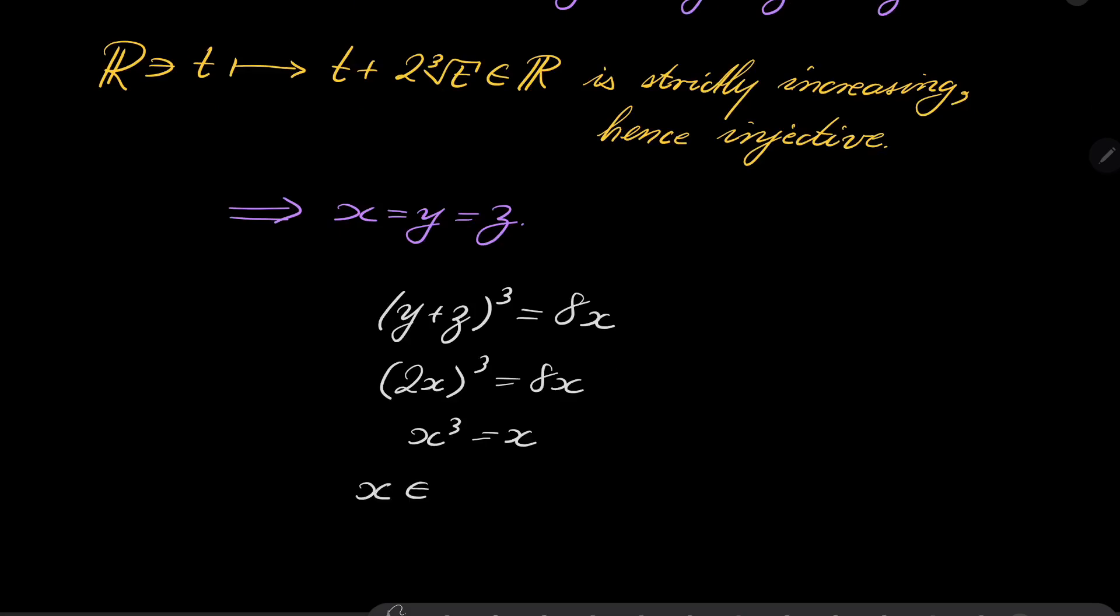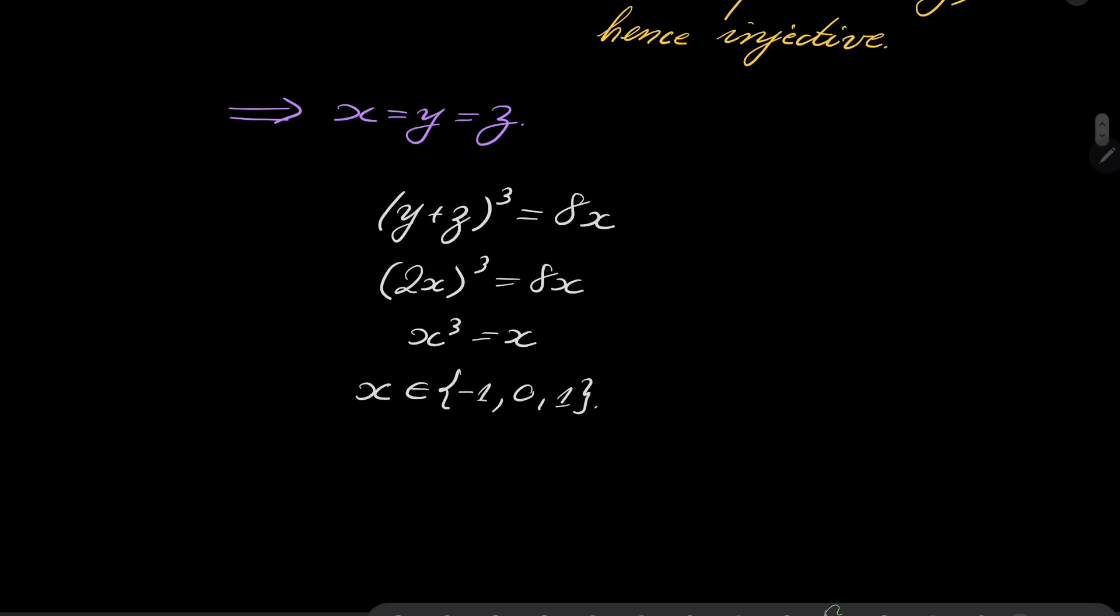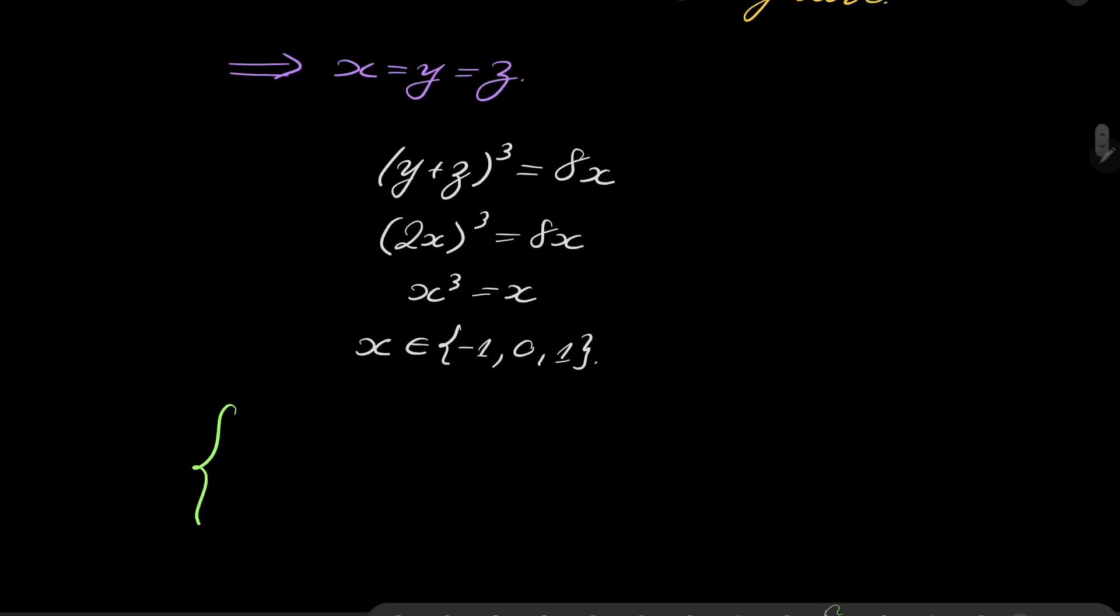x is -1, 0, or 1, which means that we have exactly three triples of solutions: (-1, -1, -1) or (0, 0, 0) or (1, 1, 1).